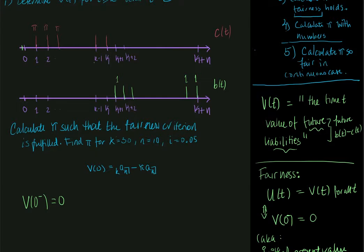And we want those two to be equal to each other such that v(0-) is equal to 0. So fairness is fulfilled if the present value of all future contributions is equal to the present value of all the future benefits. And in a way it kind of makes sense.